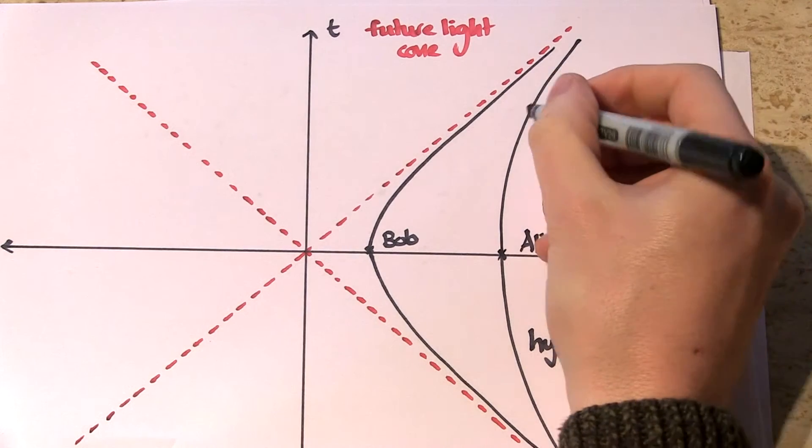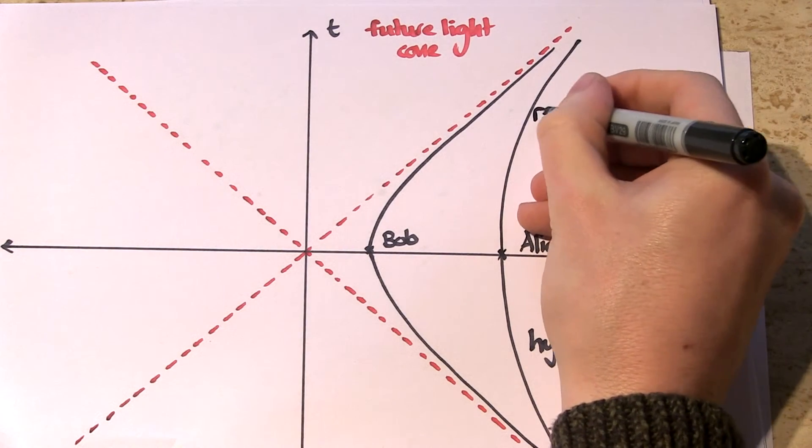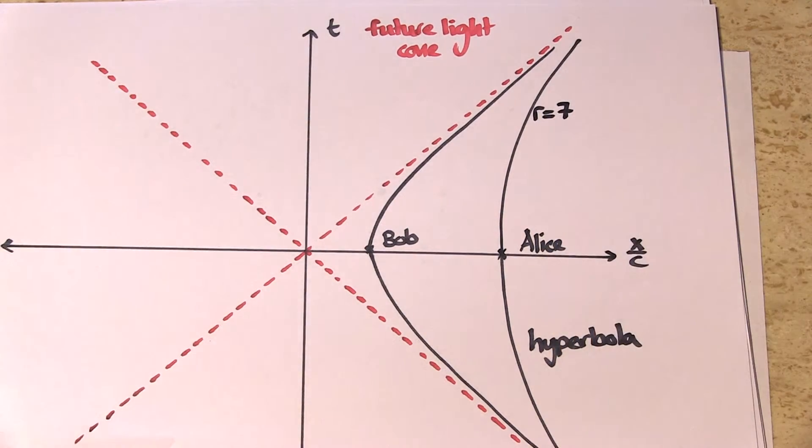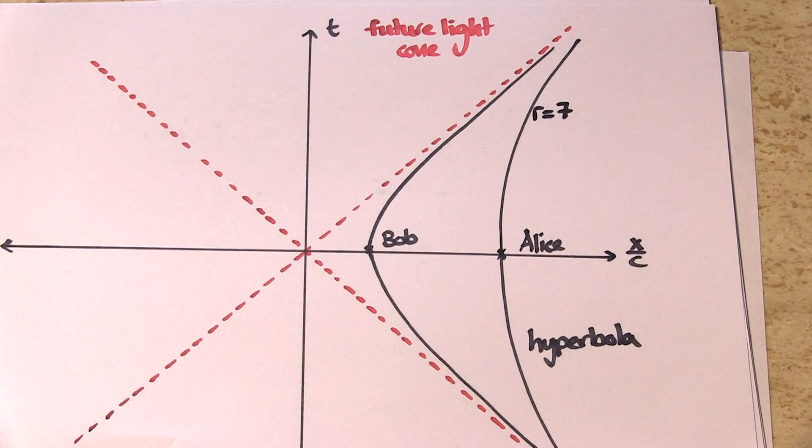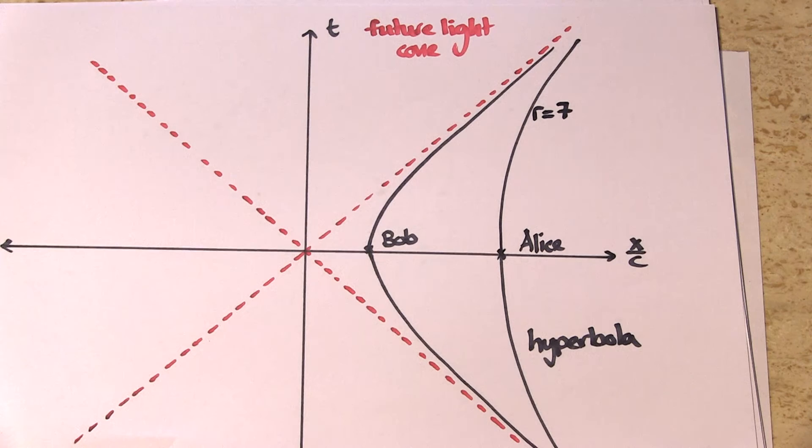Since we can use any units of distance we like, let's just say that Alice is at height 7 above the centre of the black hole. I agree with you, it does seem a bit dodgy, but if you massage them the right way, this diagram is an accurate representation of the equations of general relativity.